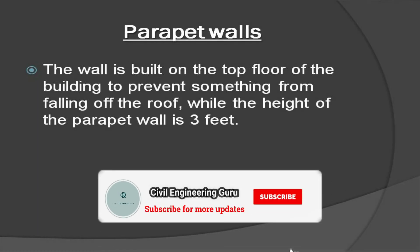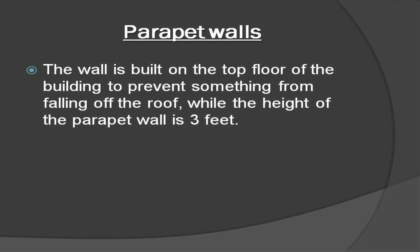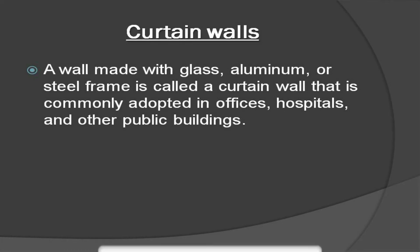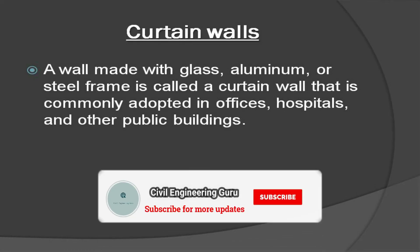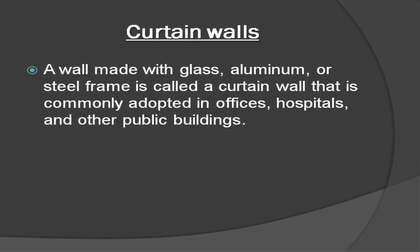Parapet walls: the wall that is built on the top floor of the building to prevent something from falling off the roof. The height of the parapet wall is three feet. Curtain walls: a wall made with glass, aluminum, or steel frame is called a curtain wall, and it is commonly adopted in offices, hospitals, and other public buildings.